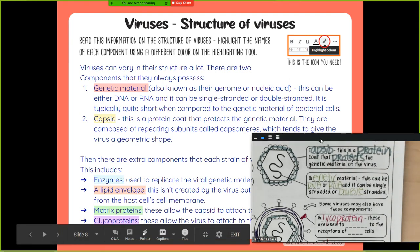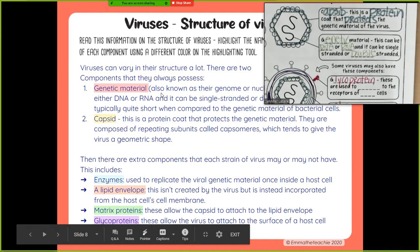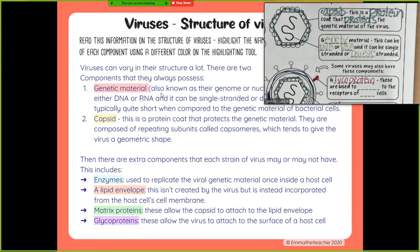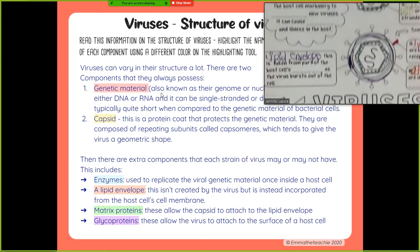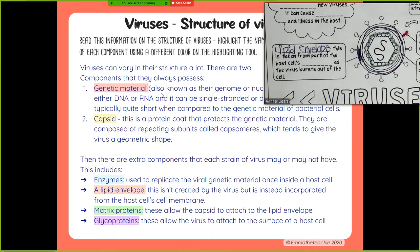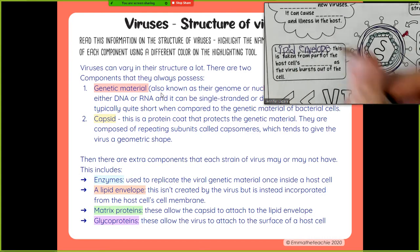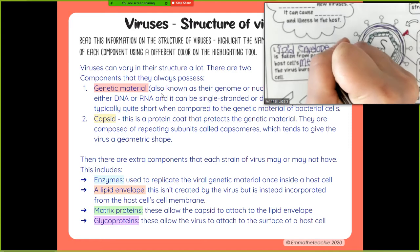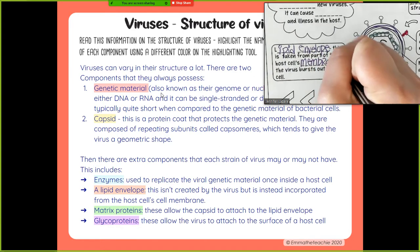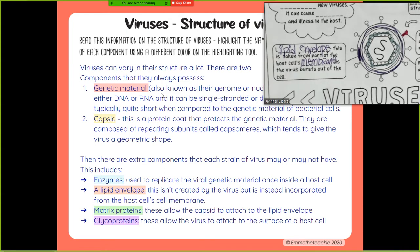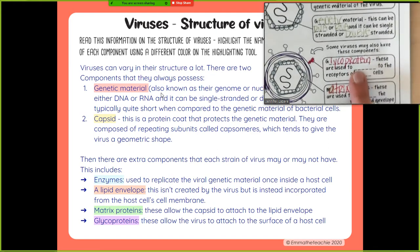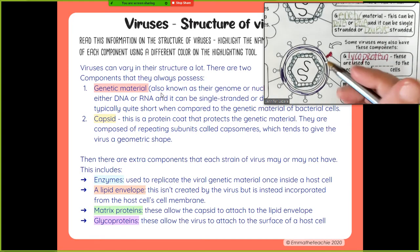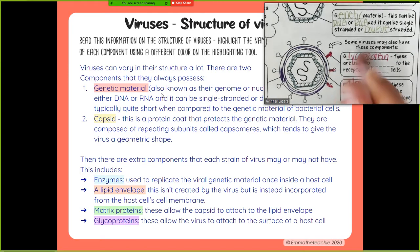Look down at the bottom — the lipid envelope. This is taken from part of the host cell's membrane as the virus bursts out of the cell. So it actually has some of the host membrane, which is kind of creepy. The glycoprotein — remember these little crowns on the coronavirus. These are used to attach to the receptors of host cells. Super important.